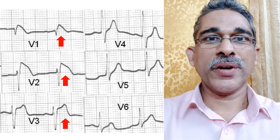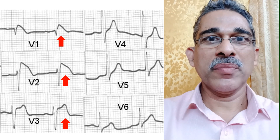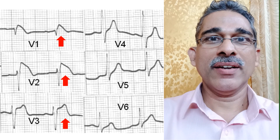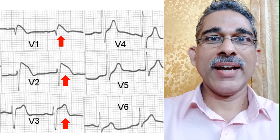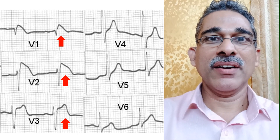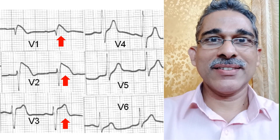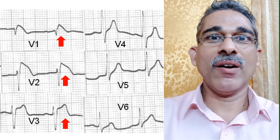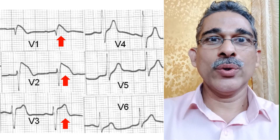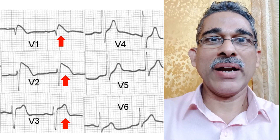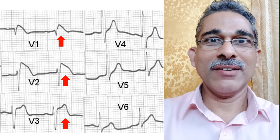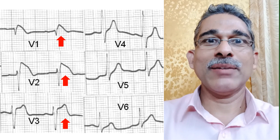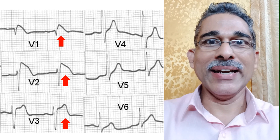Brugada syndrome is an inherited arrhythmic disorder with right bundle branch block pattern and ST elevation in right precordial leads. In contrast, a usual right bundle branch block pattern will have ST depression in right precordial leads.